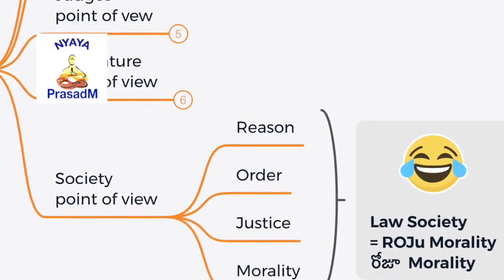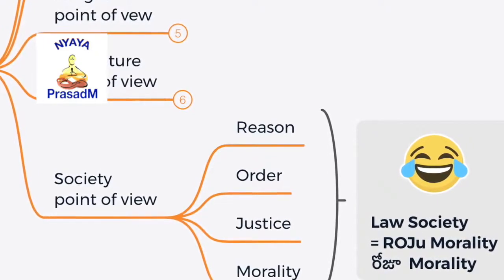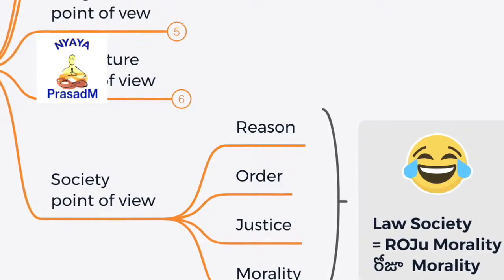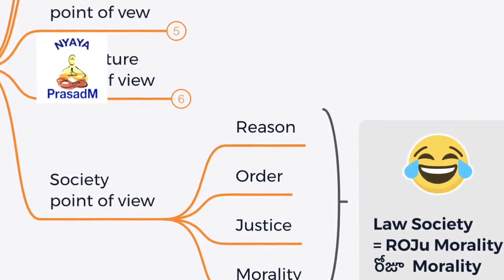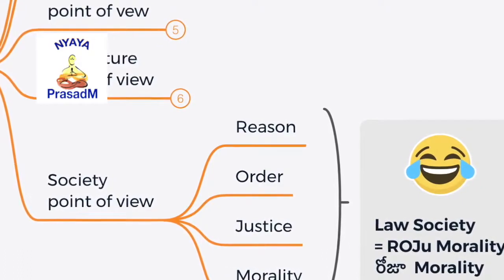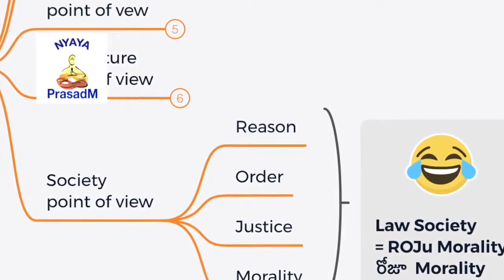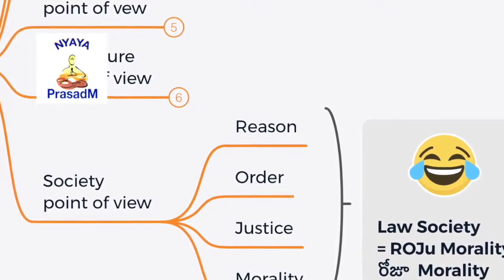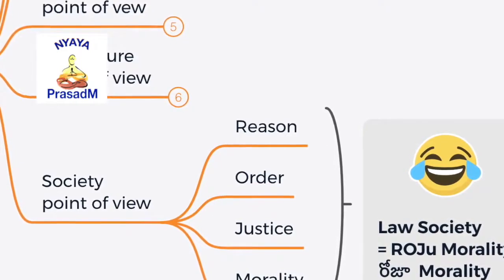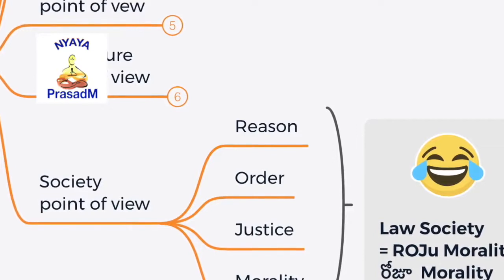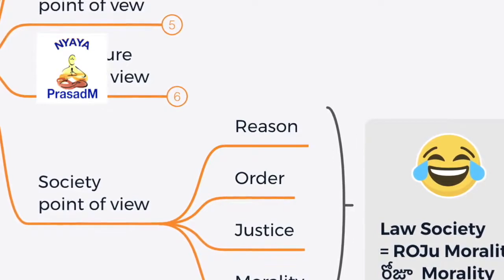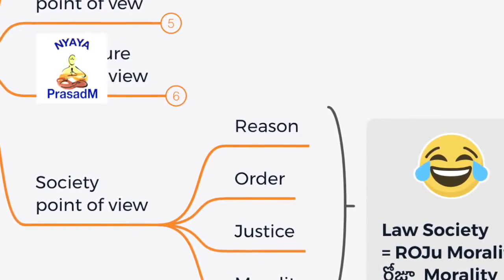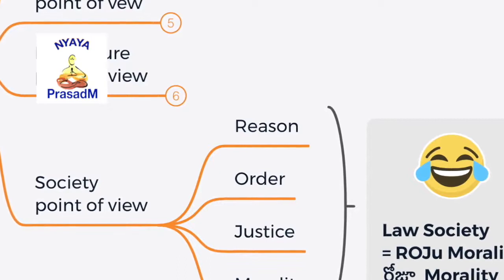ROJU is the word — R-O-J-U. R for Reason, O for Order, J for Justice, and U — together J-U stands for Justice and Morality — is what they expect. So from a society point of view, it is morality what they expect every day. Therefore it is 'Roju morality,' which stands for Reason, Order, Justice, and Morality.